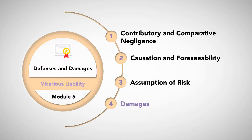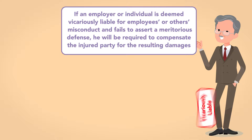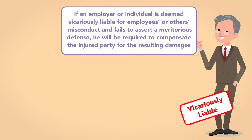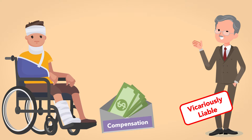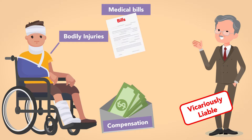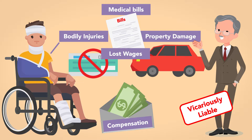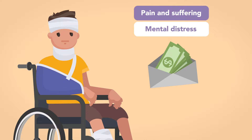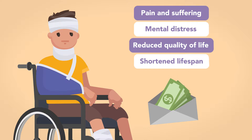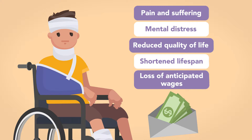Damages: If an employer or individual is deemed vicariously liable for employees' or others' misconduct and fails to assert a meritorious defense, he will be required to compensate the injured party for the resulting damages. This will ordinarily include compensation for bodily injuries, medical bills, property damage, and lost wages. In some cases, an injured party may also recover damages for pain and suffering, mental distress, reduced quality of life or shortened lifespan, and loss of anticipated wages. The goal is to fully compensate an injured party for all losses incurred because of the employee's or individual's misconduct.